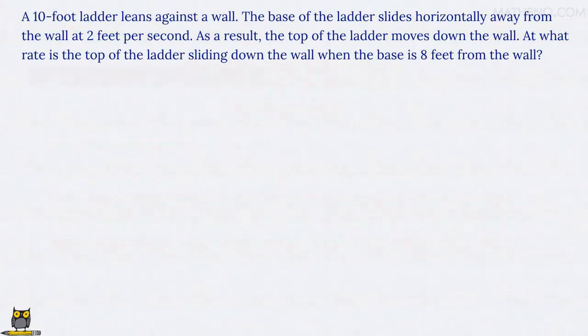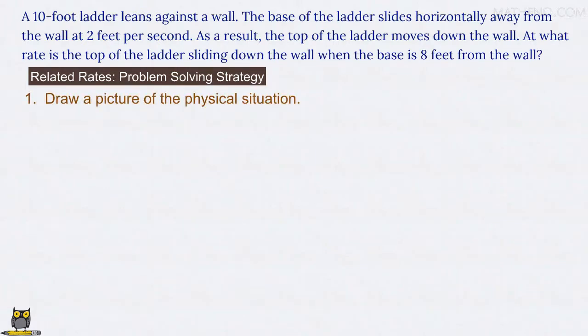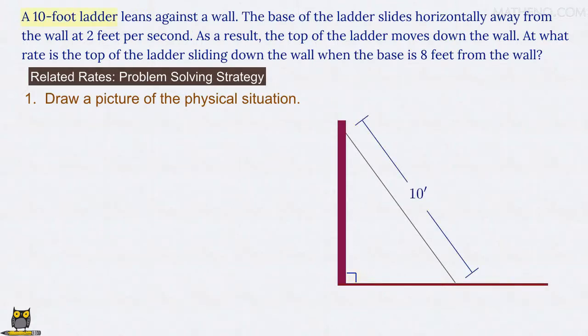We'll use our four-step problem-solving strategy for related rates problems to tackle this, since it works every time. We first draw a picture of the situation, which is a ladder leaning against a wall. Once you draw the picture, you might notice right away that the ladder forms a right triangle with the floor and the wall. This geometry of the right triangle will be crucial to our solution and is a big clue to the approach we'll use.